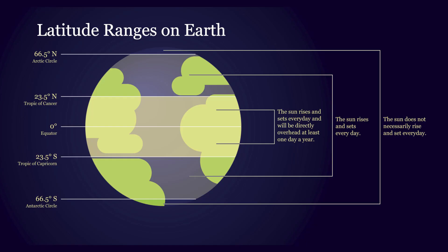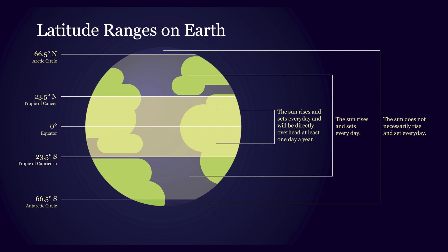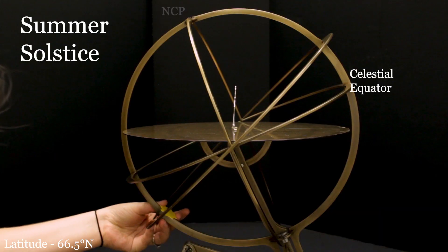Regions where there is at least one day a year when the Sun does not rise or set are called the arctics in the Northern Hemisphere and the Antarctics in the Southern Hemisphere. On the Arctic Circle, the Sun just barely doesn't set on the summer solstice and just barely doesn't rise on the winter solstice.